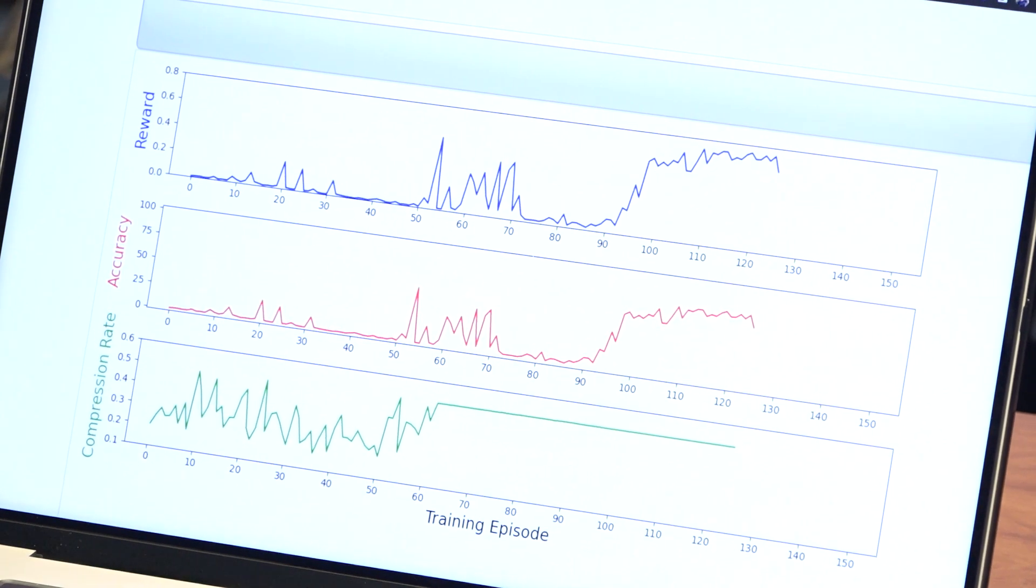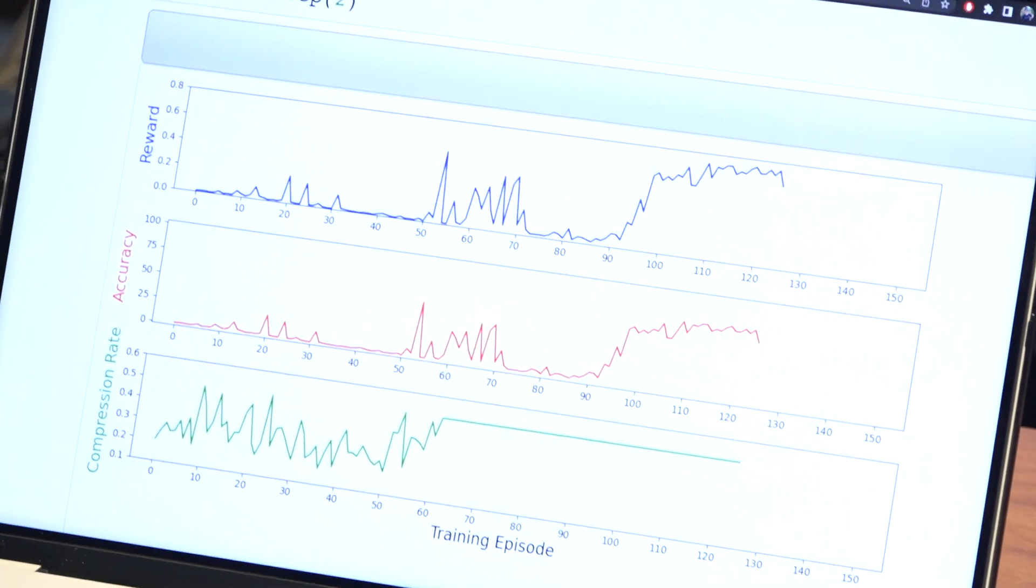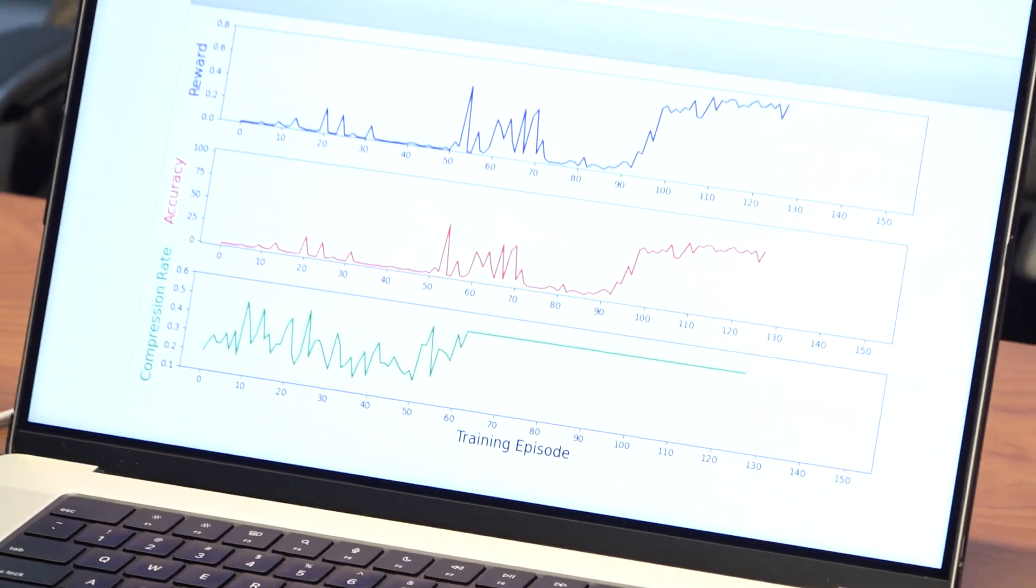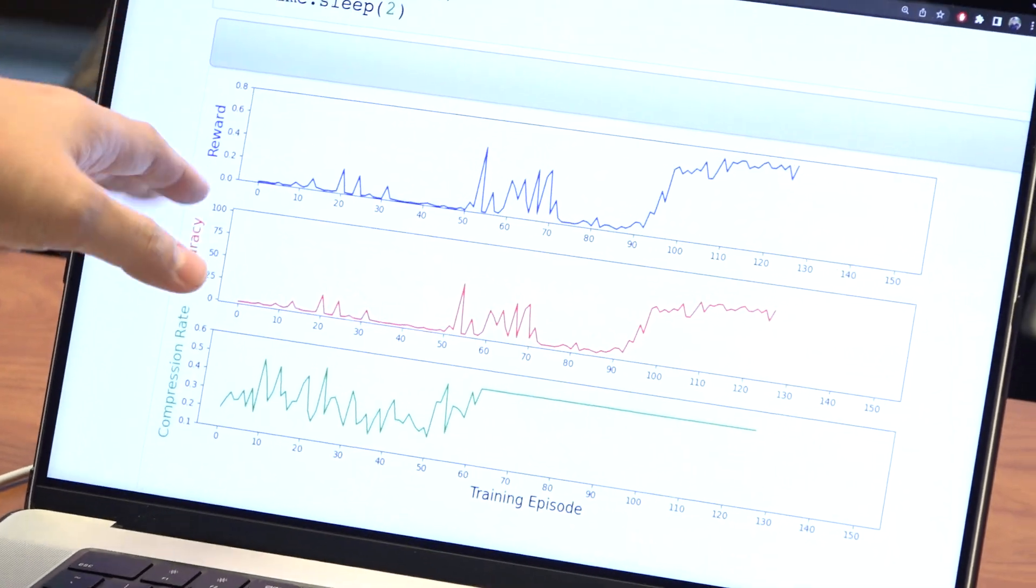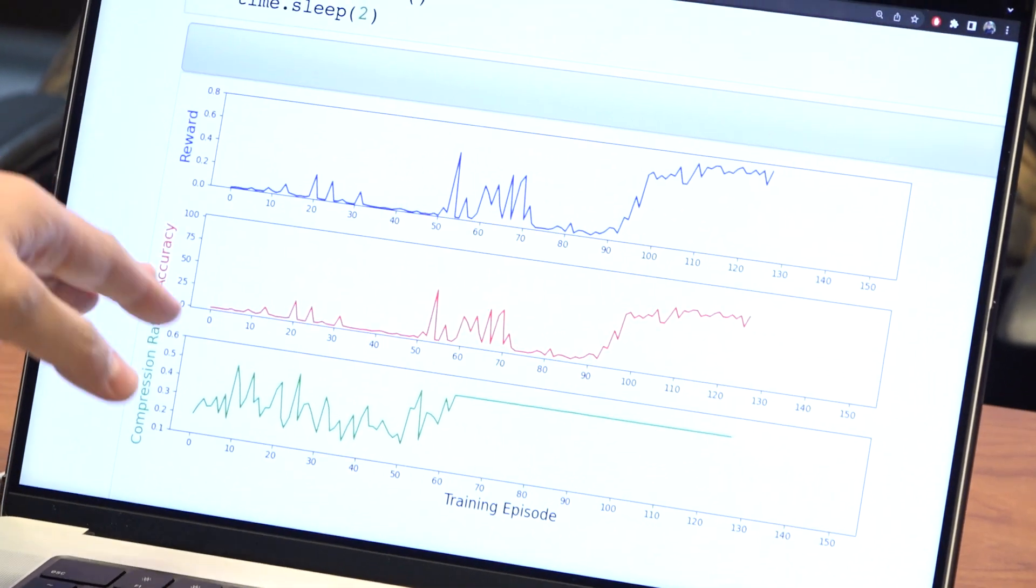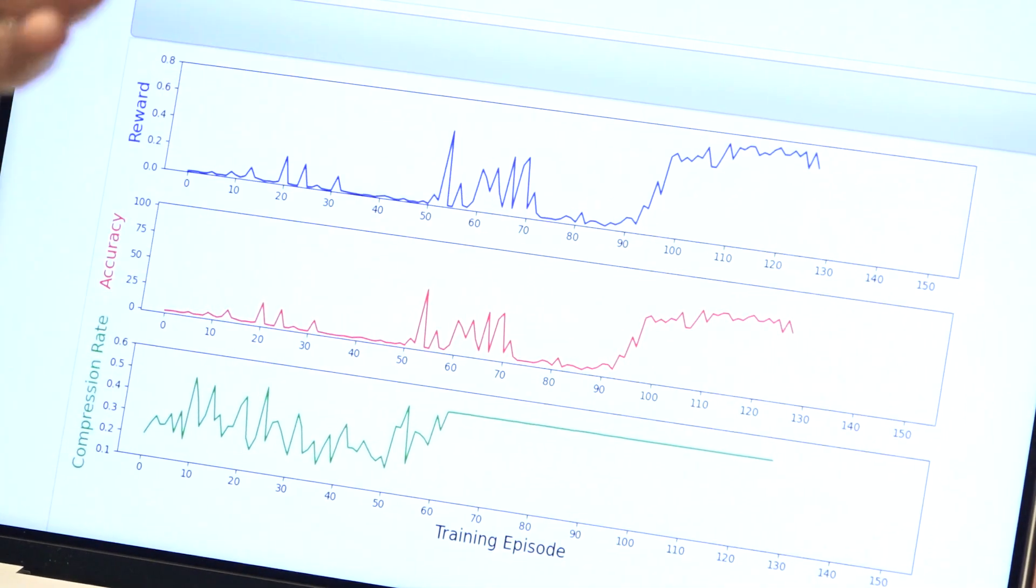50% of the model. We set the hard threshold in order to make sure the model doesn't prune too much. The reward you see here is a combination of the accuracy and the compression rate.